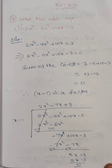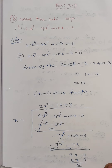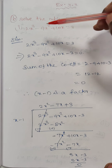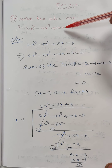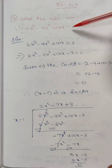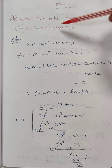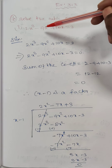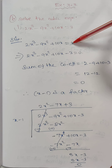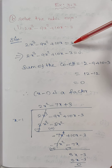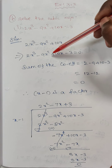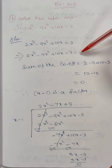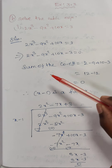Hi students, today we are going to discuss exercise 3.3, question number 6: solve the cubic equation. The given equation is 2x³ minus 9x² plus 10x equals 3. We take 3 to the left-hand side, giving us 2x³ minus 9x² plus 10x minus 3 equals 0.